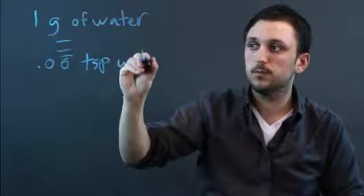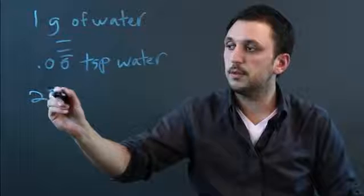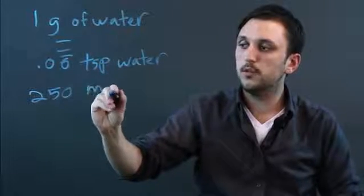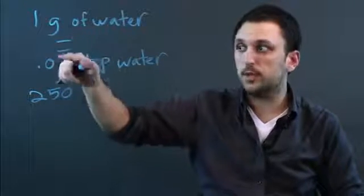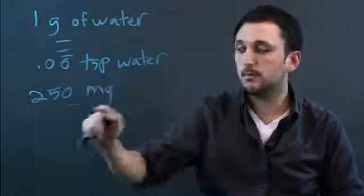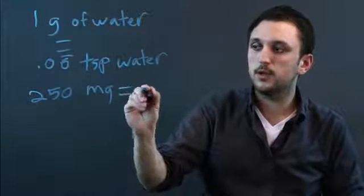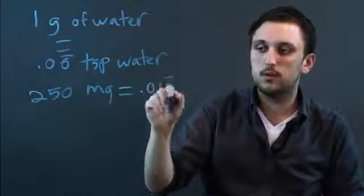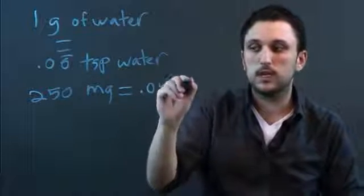And that means that 250 milligrams, which is one-fourth of a gram because there's a thousand milligrams in a gram, 250 milligrams of water equals 0.016 repeating, and just the six is repeating, teaspoons.